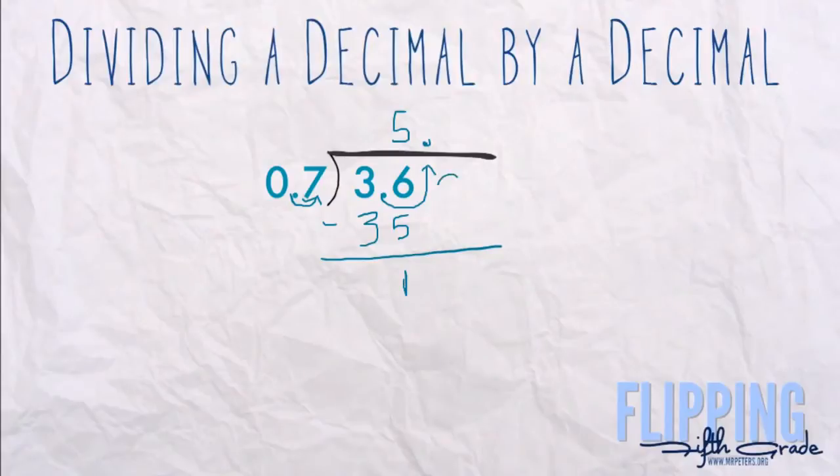And then right here we can actually put down a zero and bring it down because remember there's a decimal there - you can put as many zeros as you want to get an answer. We bring down our zero, now we ask ourselves how many times does 7 go into 10 and the answer is 1 time.